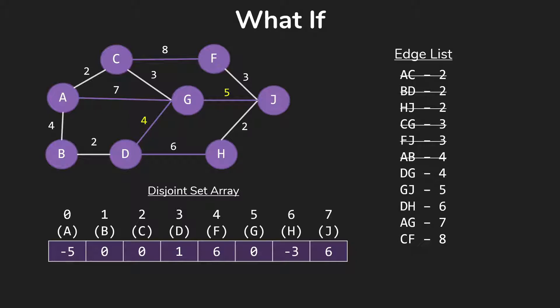So what I'm going to do is go back to the point where we were adding that last edge. I'm going to flip the costs of DG and GJ so that DG is 4 and will come before GJ at 5. So that would mean the next edge we would look at when we were at this stage of the process would be DG.